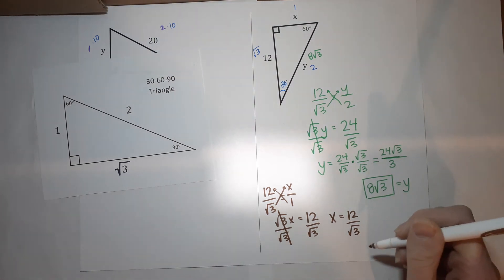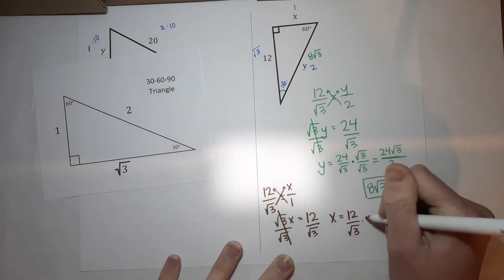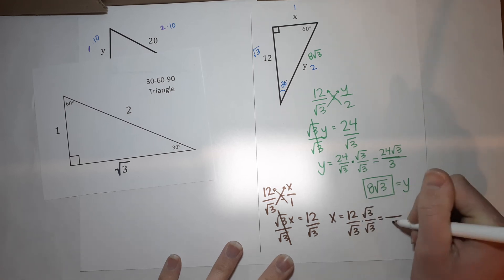But this should be like an alarm now. We do not like radicals in our denominator. So I'm going to multiply by the square root of 3 over the square root of 3. Again, we do that because square root of 3 times the square root of 3 just gives me a 3. 12 times the square root of 3 is 12 square roots of 3.